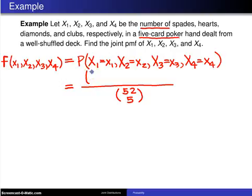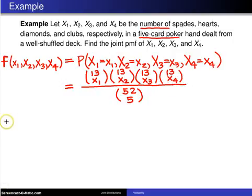Out of the 13 spades, you want to choose x1, and out of the 13 hearts, you want to choose x2, and out of the 13 diamonds, you want to choose x3, and out of the 13 clubs, you want to choose x4, and there is your probability mass function.